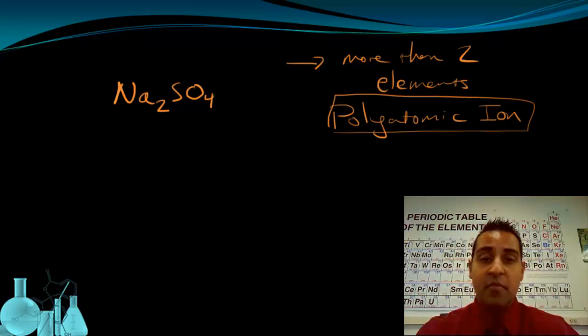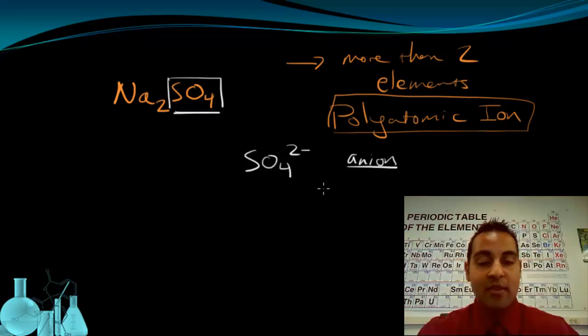So if I look up my list of polyatomic ions, I'm going to see that SO4 is the polyatomic ion in this compound. When I look up SO4, I'll also notice that SO4 has a -2 charge, so it is the anion in this compound. Meaning the name for this ion, the sulfate ion, is going to be the last name in my naming scheme. So I'm going to name the sodium first, so that's just sodium, and then I'm going to do the last name, which is sulfate.